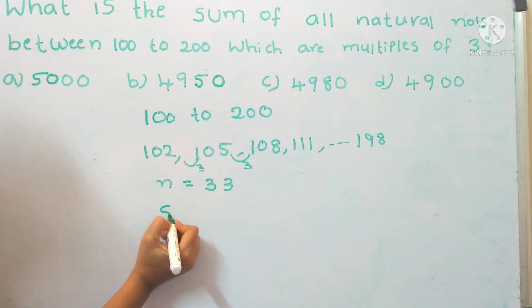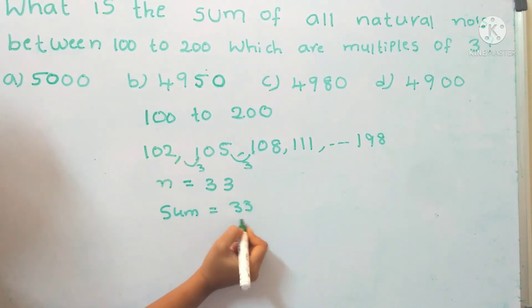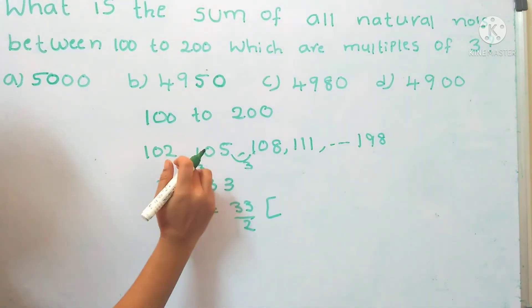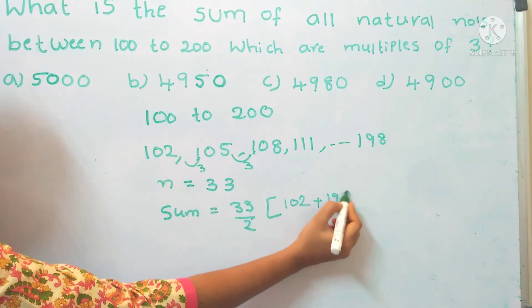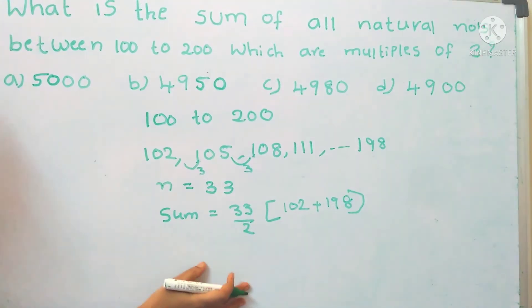We have a formula: sum equals n by 2 into first term plus last term. That is 33 by 2 into 102 plus 198.